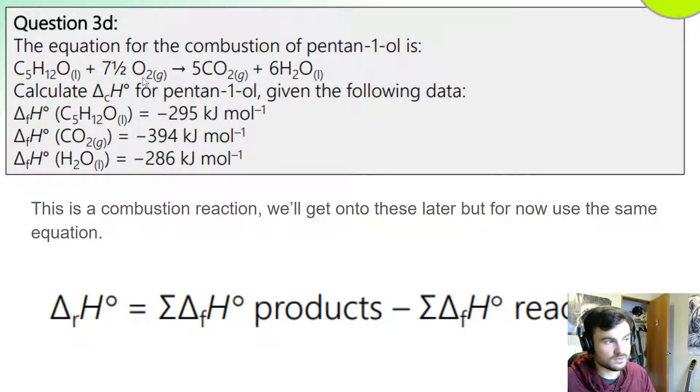When elements are by themselves like solid carbon or oxygen gas or hydrogen gas, these are not going to have a formation value. We do not see it here because they're already in their base state. Nothing can form them. So they do not have an enthalpy of formation value. They're just zero.